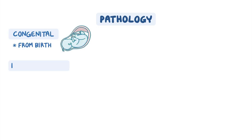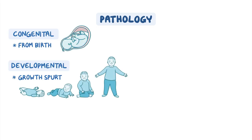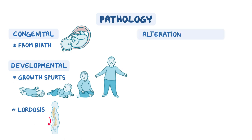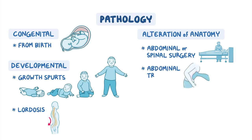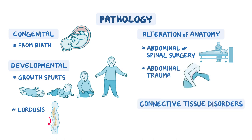This structural anomaly can be congenital, meaning from birth, developmental such as with growth spurts and lordosis, or caused by an alteration of anatomy due to abdominal or spinal surgery or abdominal trauma, and it has been associated with connective tissue disorders.